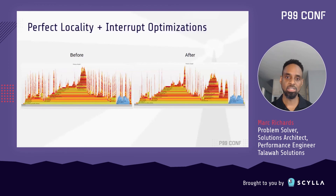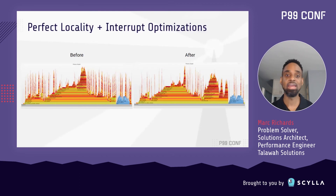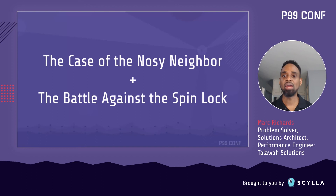Crossing the 1 million requests per second mark was a major milestone. Nevertheless, I still just felt like there were more gains to be had. I'd become a little bit optimization obsessed at this point — basically going through the flame graph with a magnifying glass trying to find anything that could be eliminated. Out of that, I have two detective work stories, but I really only have time to cover one. I'm going to break down the case of the nosy neighbor for you, but just kind of gloss over the battle against the spin lock.